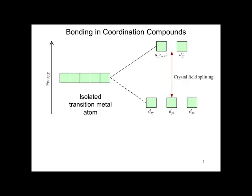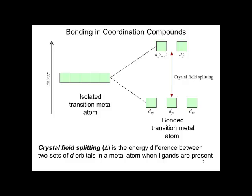However, when a ligand comes in and bonds to the transition metal, the d-orbitals are split — three lower and two above. This is called crystal field splitting. The crystal field splitting, given the symbol delta, is the energy difference between the two sets of d-orbitals in a metal atom when the ligands are present.